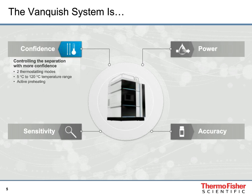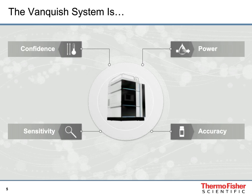The column thermostat is a device that is often underestimated. Thorough control of column temperature is crucial to control various separations. We implemented two thermostatic modes — still air and fast air — both available over a wide temperature range from 5°C to 120°C. We also offer an active preheater that can be set to a temperature independent of the compartment temperature, because it has its own independent control cycle.